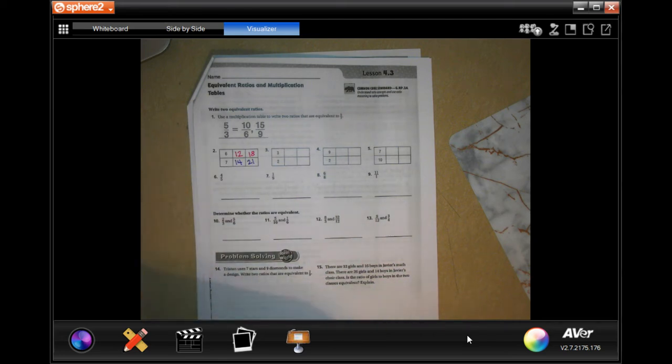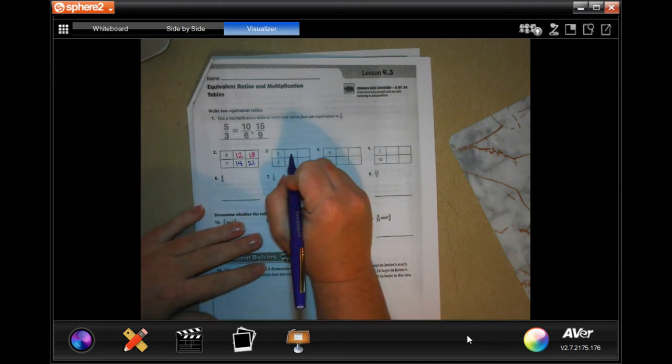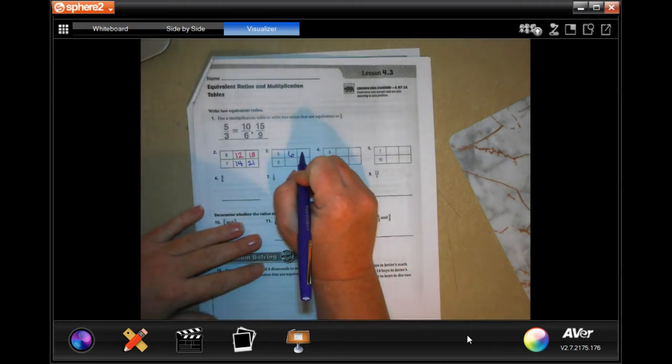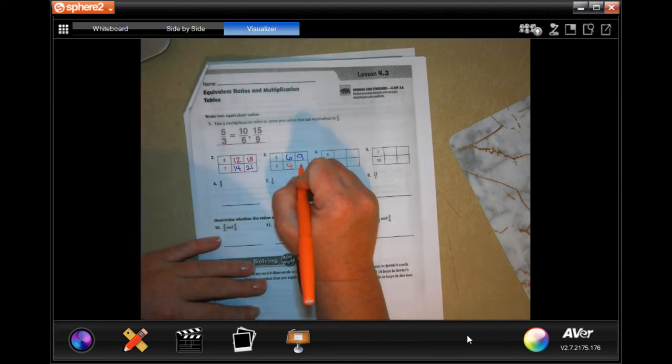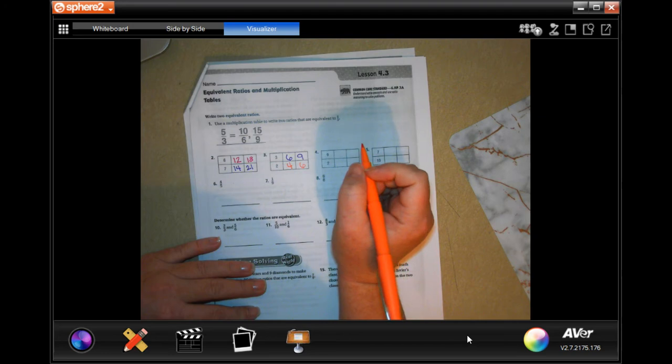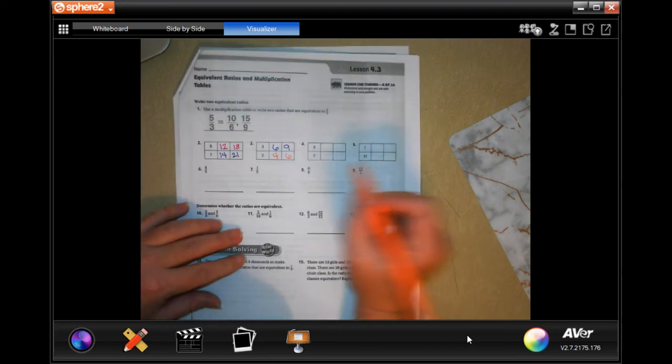All right, so now we're going to go to the next one. Multiply by 3: 3 times 1 is 3, 3 times 2 is 6, 3 times 3 is 9. 2 times 2 is 4, 2 times 3 is 6. All right, you guys do those last two, you totally can.